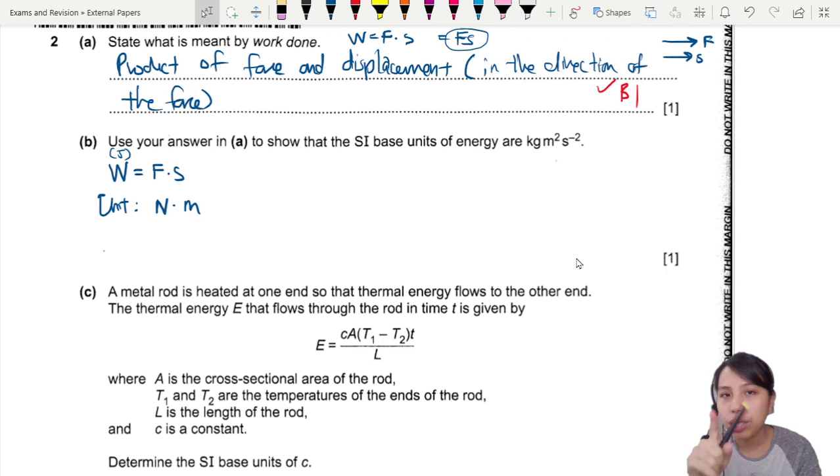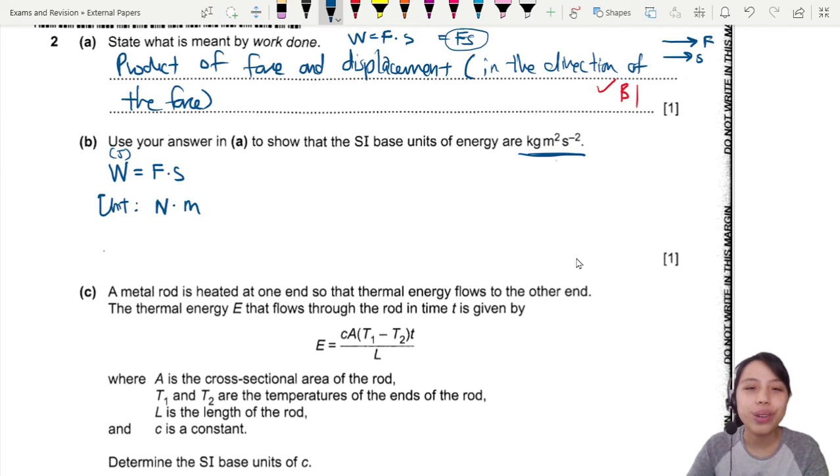But don't stop there. Newton can be broken down. Wow, they give us the answer again. So nice. So force equals to mass times acceleration. So we've got to write that mass acceleration and m. So at the end of the day, this will give us a unit of energy, which is kg m squared s negative 2.